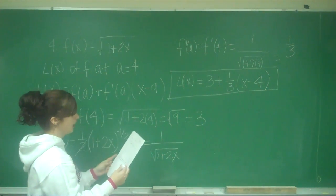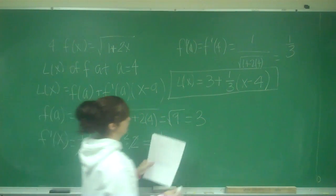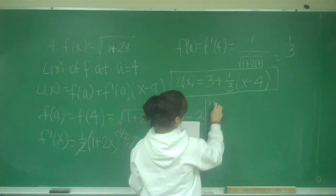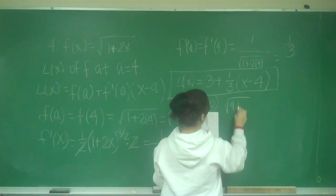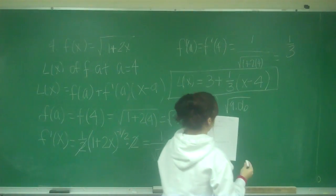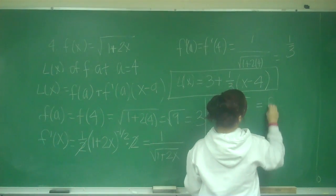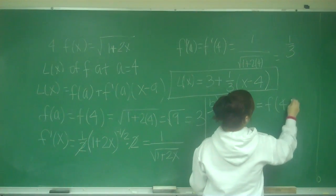And then part B says use L(x) to, so I'm going to do part B. So it says use L(x) to approximate the square root of 9.06. And they gave us a hint that this was equal to f(4.03).